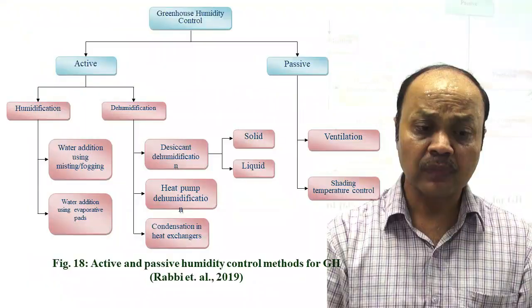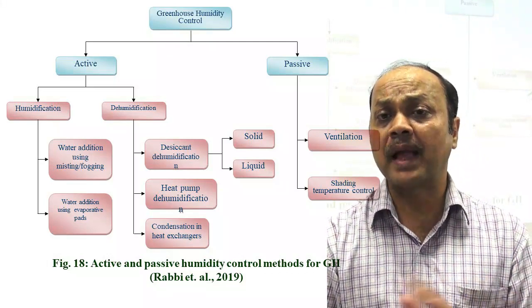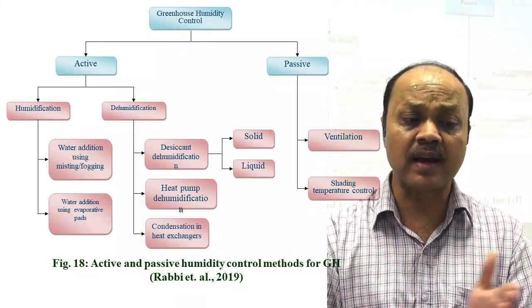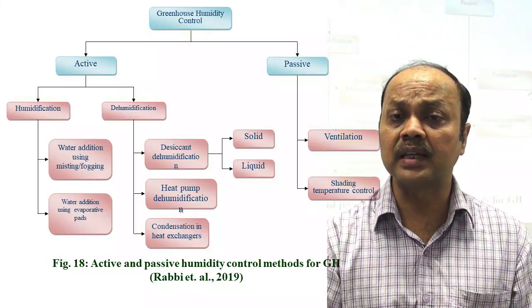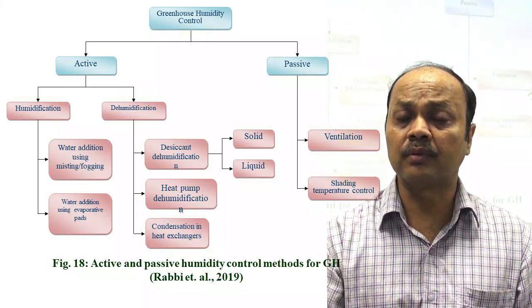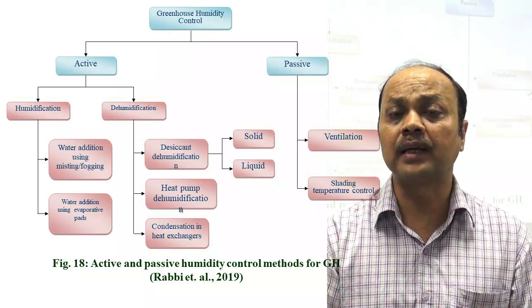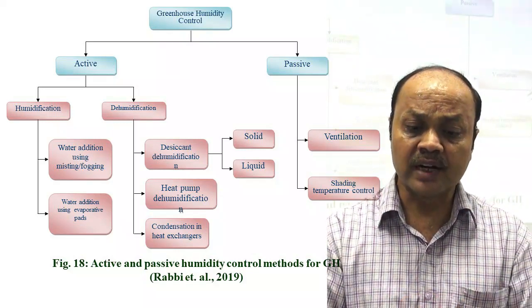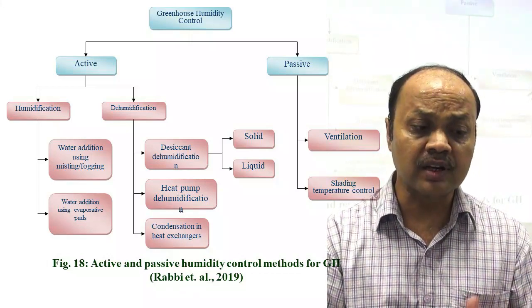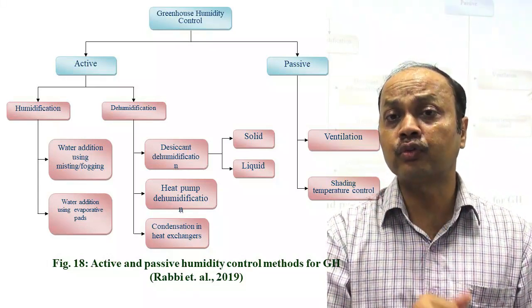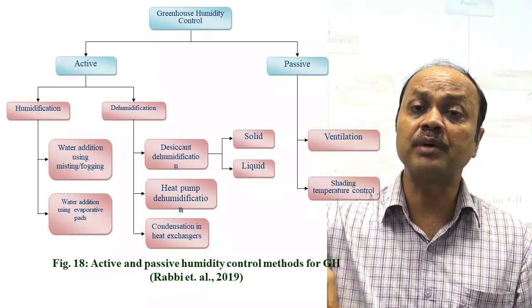For controlling RH inside the greenhouse there are passive and active methods, similar to heating and cooling control. Passive methods use no external energy — for example, ventilation by opening windows or adjusting temperature control. Setting temperature control can help you manage RH inside the greenhouse. Active methods include humidification and dehumidification — humidification means adding moisture inside, dehumidification means removing it.